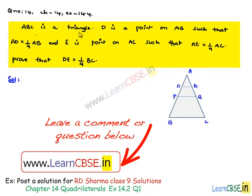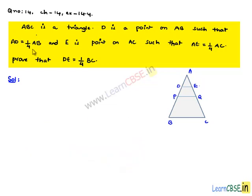Given that ABC is a triangle, D is a point on AB such that AD is equal to one-fourth AB, and E is a point on AC such that AE is equal to one-fourth of AC. Prove that DE is equal to one-fourth of BC.